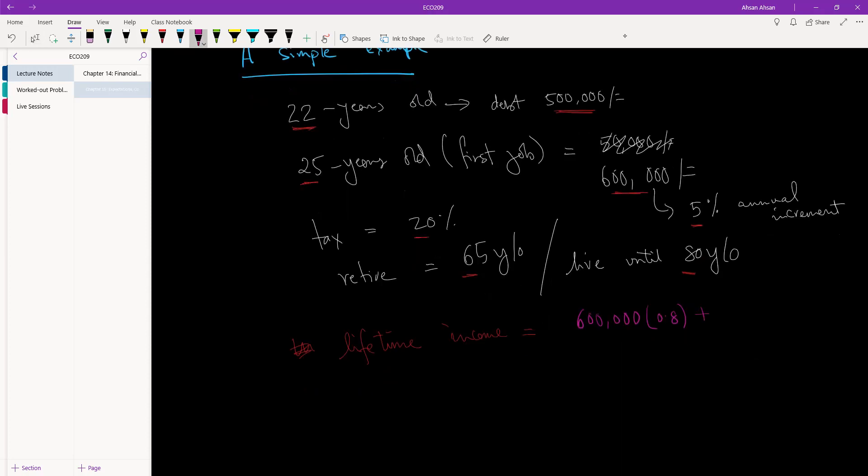For the next year, your income is $600,000 times, remember the annual increment, so times 1.05, and of course, you pay tax. So, this is how much you pay, third year, $600,000 times, sorry, $1.05 squared,